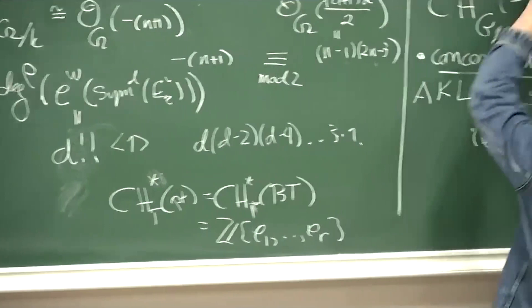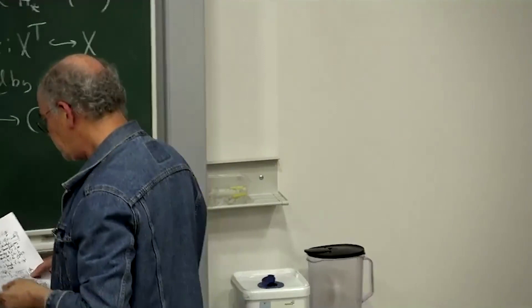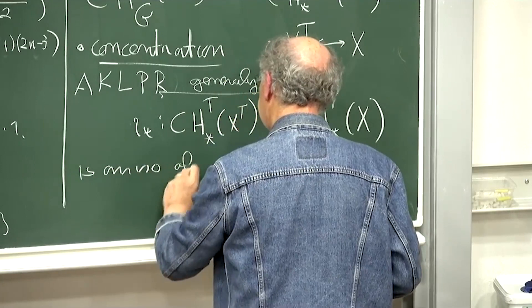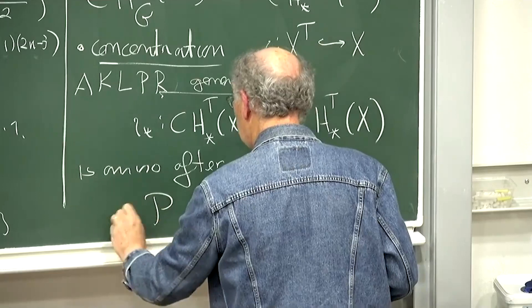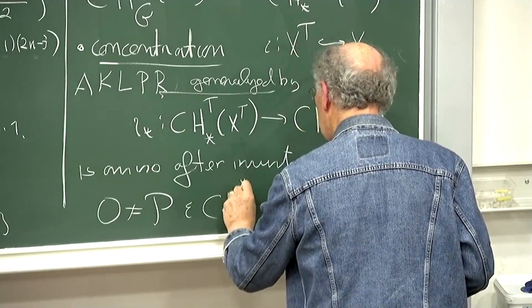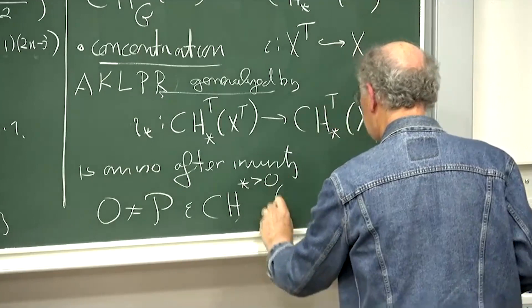This concentration map is an isomorphism after inverting some element P which is not zero in this Chow group — and I'll emphasize it has positive degree — and that yields a Bott residue formula.